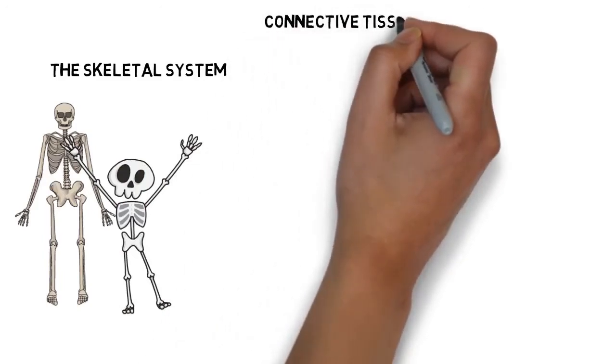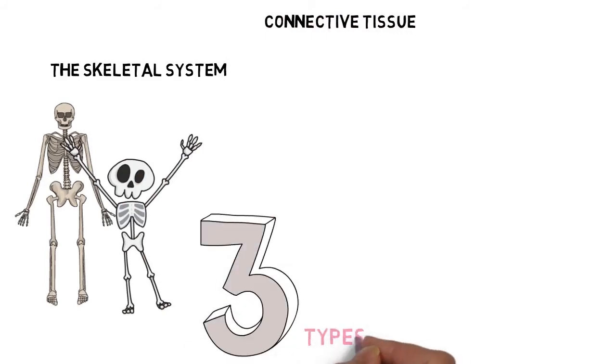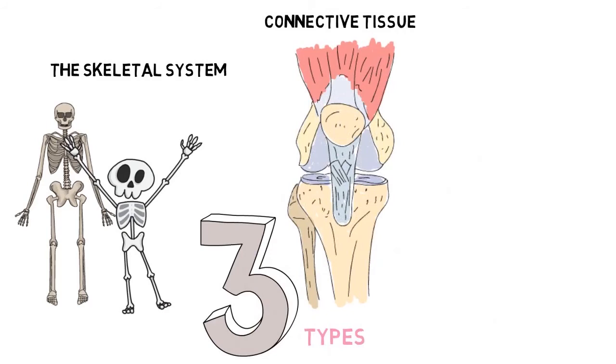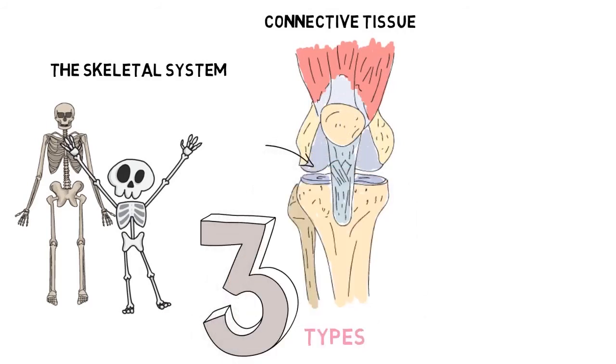Connective tissue. There are three types of connective tissue that are used in tandem with the skeletal structure to assist movement. Cartilage stops bones rubbing together. Ligaments, string-like, hold bones together, and tendons attach muscle to bone or to other muscles.